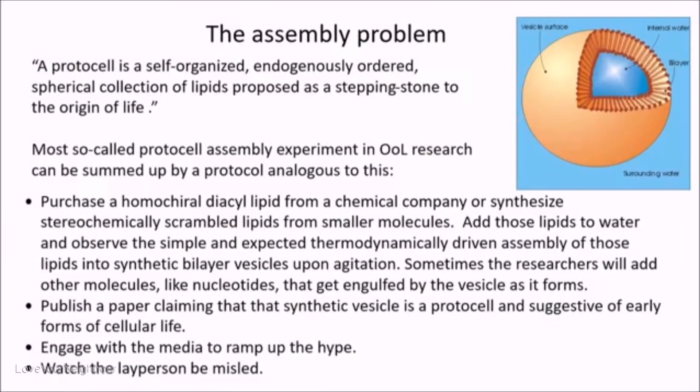Once you deal with the synthesis — which you can't, because you have to make the four classes of compounds, which nobody has ever made ab initio from prebiotic-like conditions, even using advanced synthetic techniques — then you have to assemble them into a cell. A protocell is a self-organized, endogenously ordered, spherical collection of lipids proposed as a stepping stone to the origin of life. It takes a lipid bilayer and forms a spherical system capturing water inside. This is what all protocell assembly experiments can be summed up as.